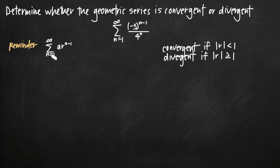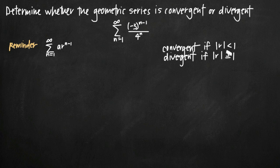As a reminder, I have the geometric series convergence test written here. It says that the infinite sum from n equals 1 to infinity of a geometric series — a times r raised to the n minus 1 power — is convergent if the absolute value of r is less than 1, and divergent if the absolute value of r is greater than or equal to 1.